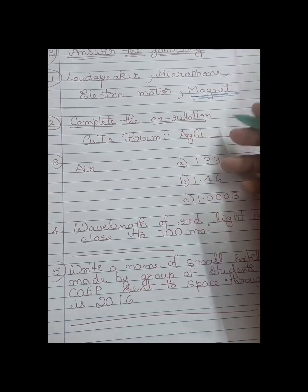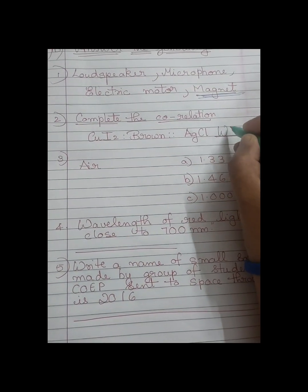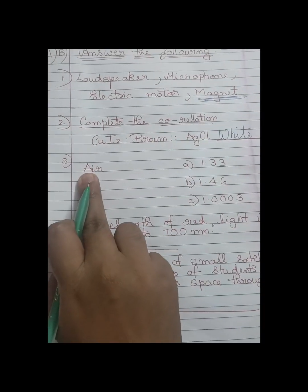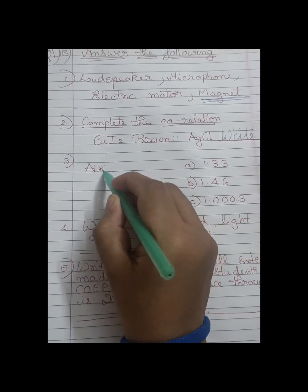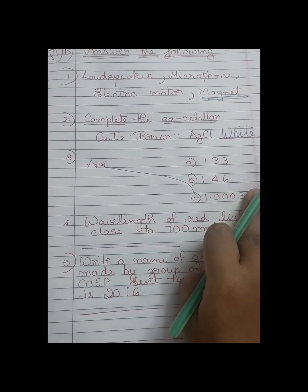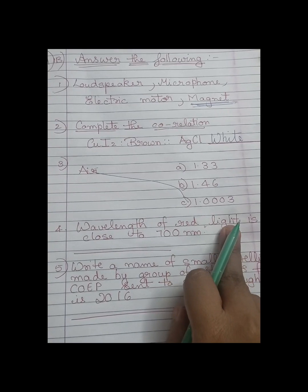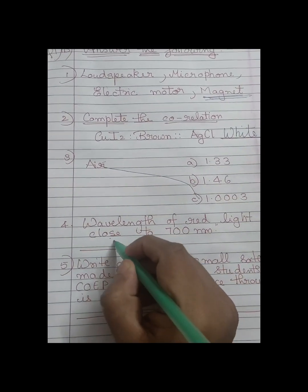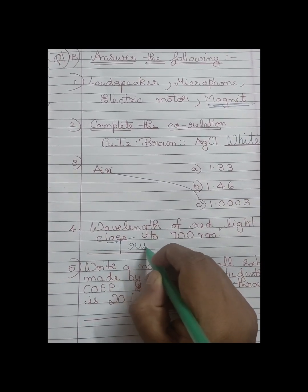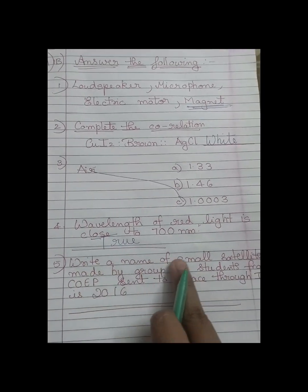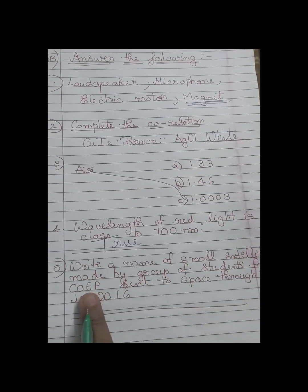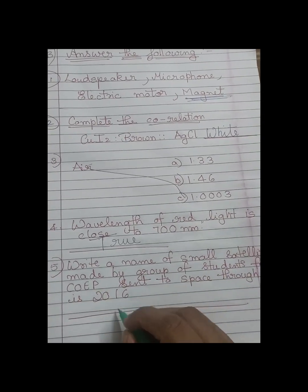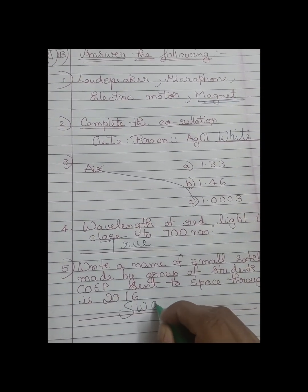AgCl is silver chloride, so it would be white. The refractive index of air is 1.0003. The wavelength of red light is close to 700 nanometers — true. The name of the small satellite made by a group of students sent to space in 2016 was SWIM.